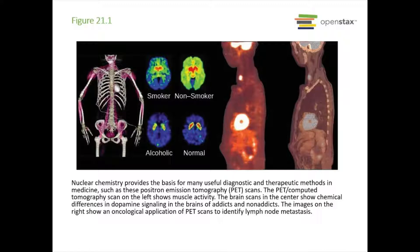Nuclear chemistry is used for a lot of different things. For example, in the medical field, PET scans — positron emission tomography — are used for looking at the human body to look for different things, and a lot of times they are used for things like cancer scans.